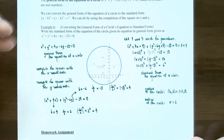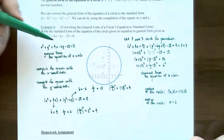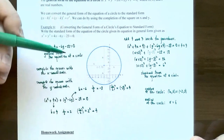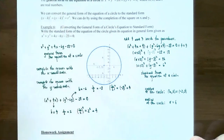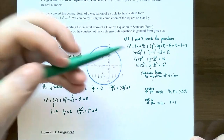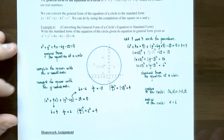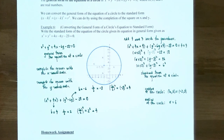General form and standard form represent the same circle, but general form doesn't immediately reveal the center or radius. We can convert from general form to standard form using completing the square, and the center and radius are easily identified from standard form. This concludes our video on circles and equations of circles. If you have questions on the examples or the homework, please let me know, and I'll see you in the next video on exponential functions.